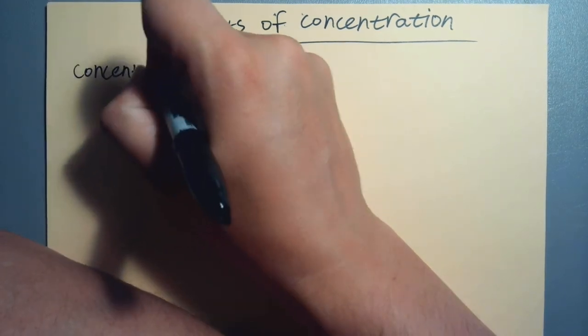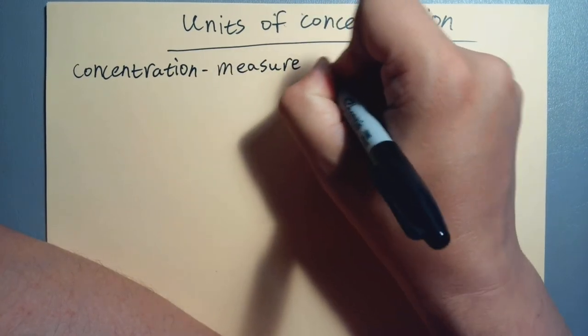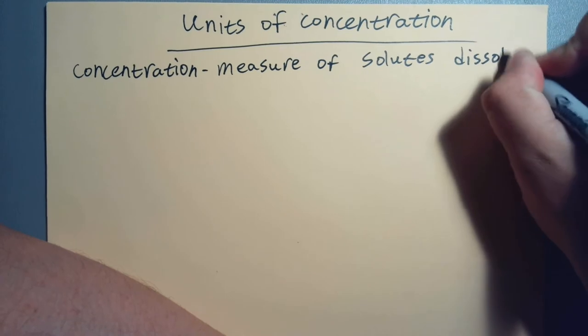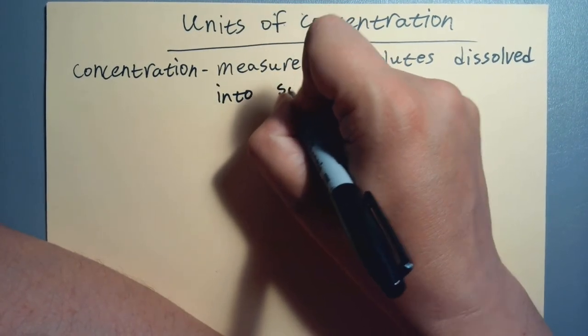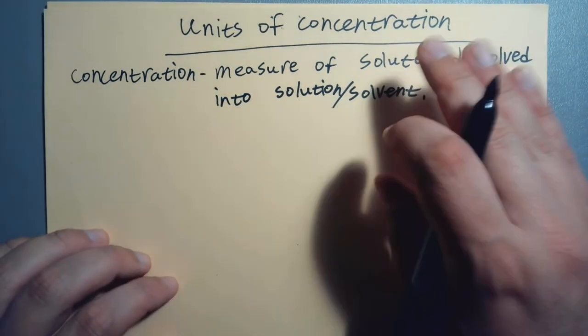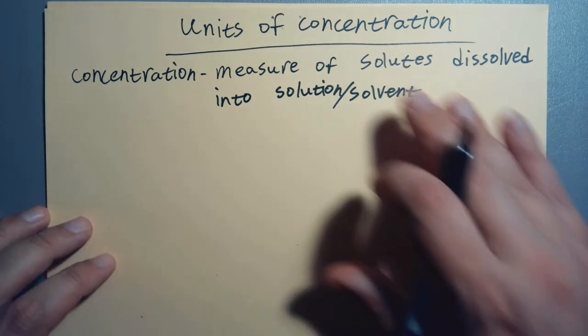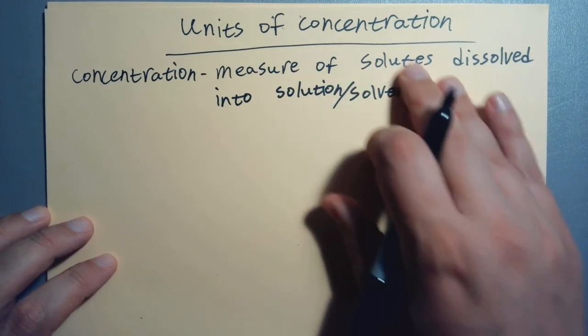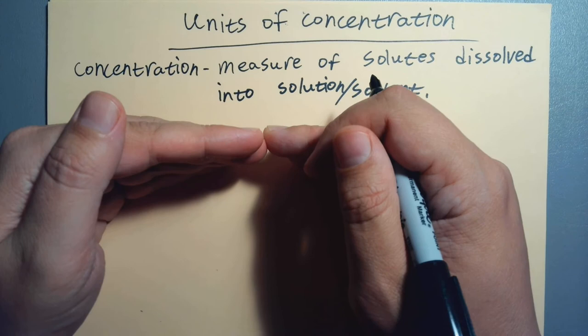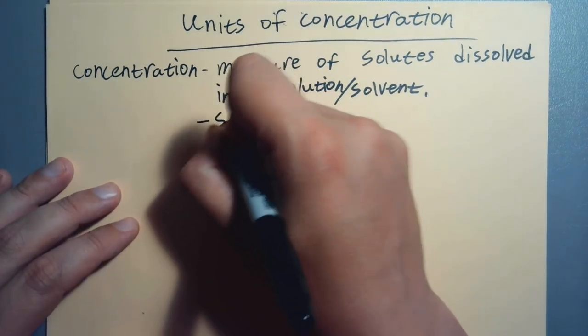So before we get into the units, let's make sure we got a good fix on what concentration is. It's a measure of solutes dissolved into a solution or some amount of solvent. We've got to track how much solute there was and how much solution there is or how much solvent was used. Another definition is strength of solution.